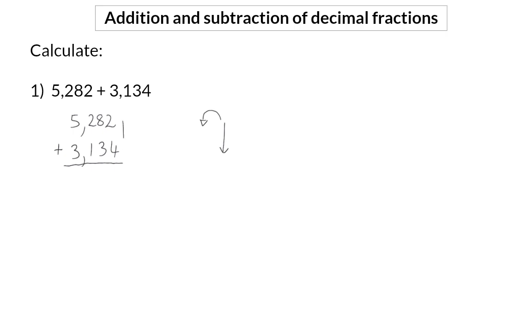We start by saying 2 plus 4 is 6. Next, we have 8 hundredths plus 3 hundredths, which will give us 11 hundredths.